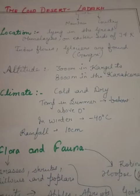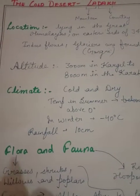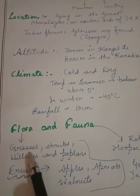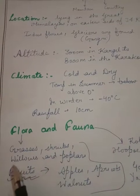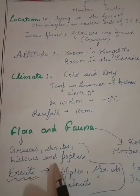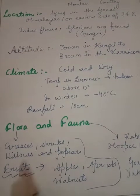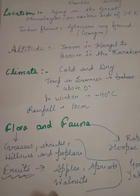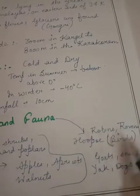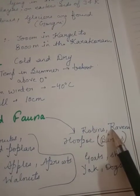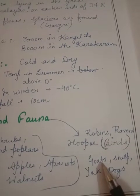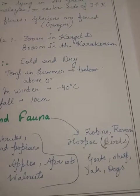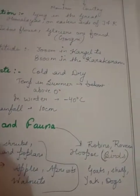Now let's look at the flora and fauna. In terms of flora, we find grasses, shrubs, willows, and poplars. For fruits, as it is a hilly area, we find apples, apricots, and walnuts. For fauna, the birds include robins, ravens, and hoopoes. Animals include wild goats, wild sheep, yaks, and dogs.